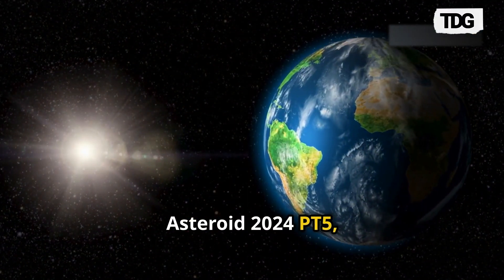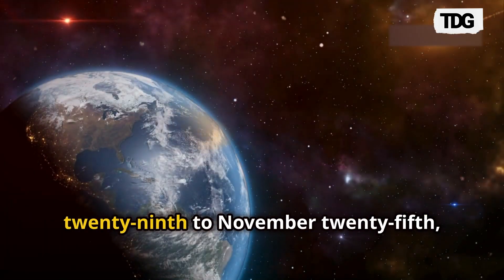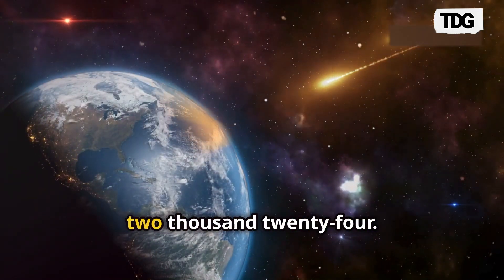Asteroid 2024 PT-5, measuring around 10 meters in diameter, will loop around Earth from September 29th to November 25th, 2024.